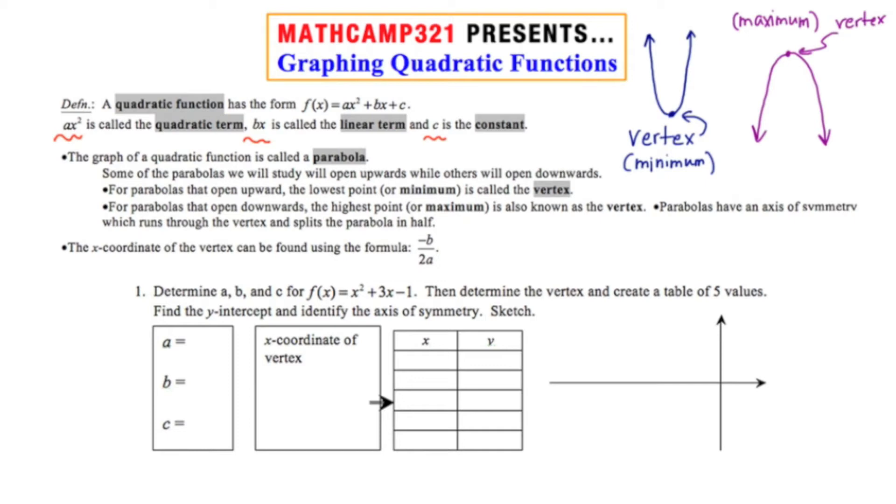If we were to draw a vertical line through the vertex, this line would split the parabola into two parts. So therefore this line is sometimes known as the axis of symmetry. Because each side of the parabola would be symmetric over this green line. So when you're looking at parabolas, perhaps the most important point is going to be this point called the vertex,